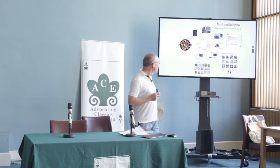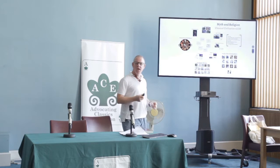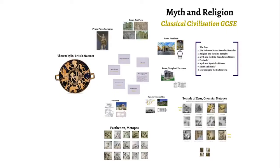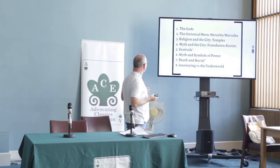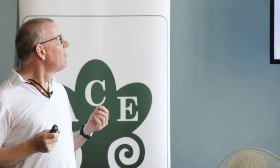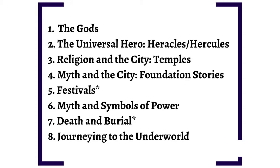One thing that strikes me from the start is quite how much material there is for myth and religion. This is a visualisation of the entire set texts, and it doesn't include anything that's not compulsory. So you've got the eight units, and of those eight, festivals and death and burial don't actually have set texts. The others do. Some seem to me slightly odd choices, but there's enough material that you can play around with it.